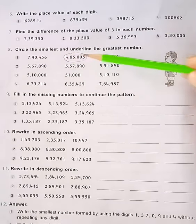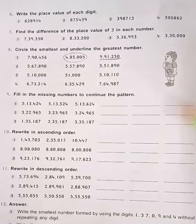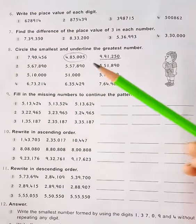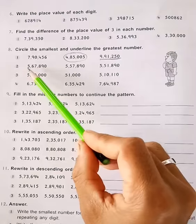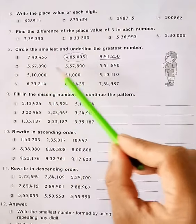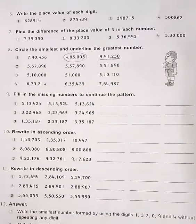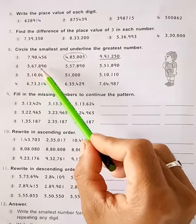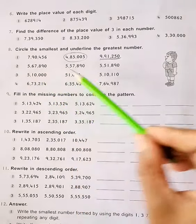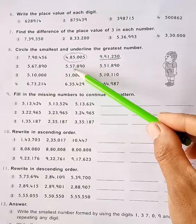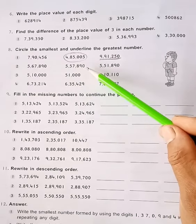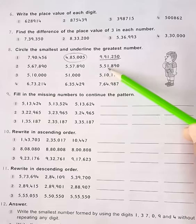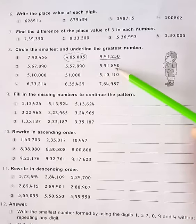Similarly, for Problem 2, first read the numbers carefully. The first number is five lakh sixty seven thousand eight hundred ninety. The second number is five lakh fifty seven thousand eight hundred ninety. The last number is five lakh fifty one thousand eight hundred ninety.